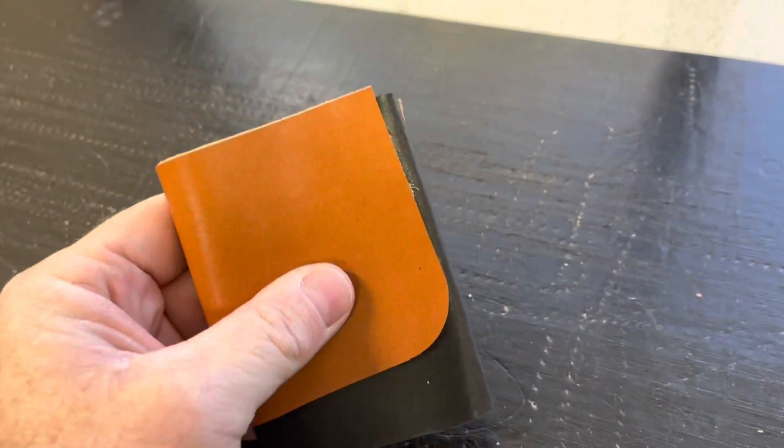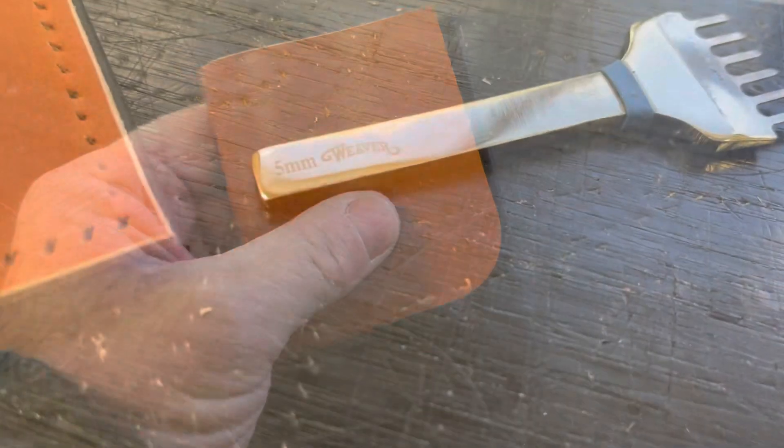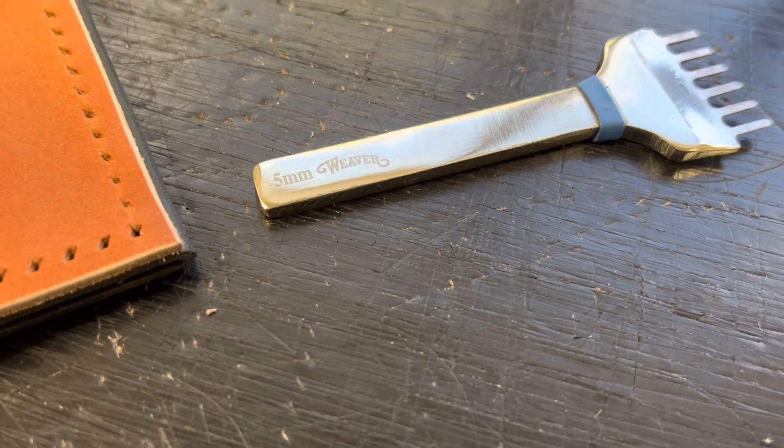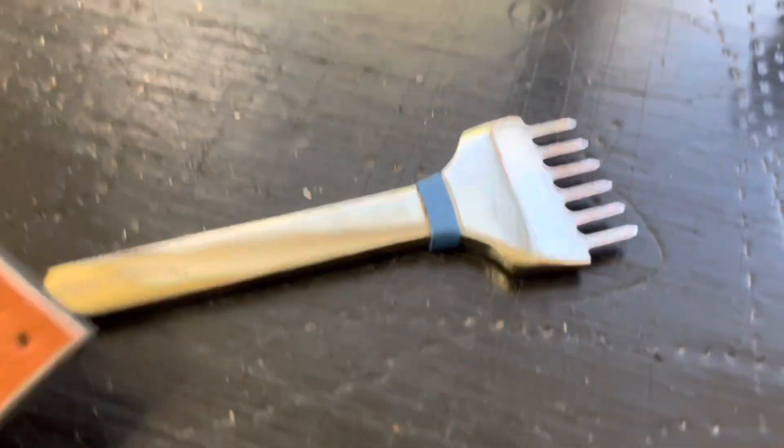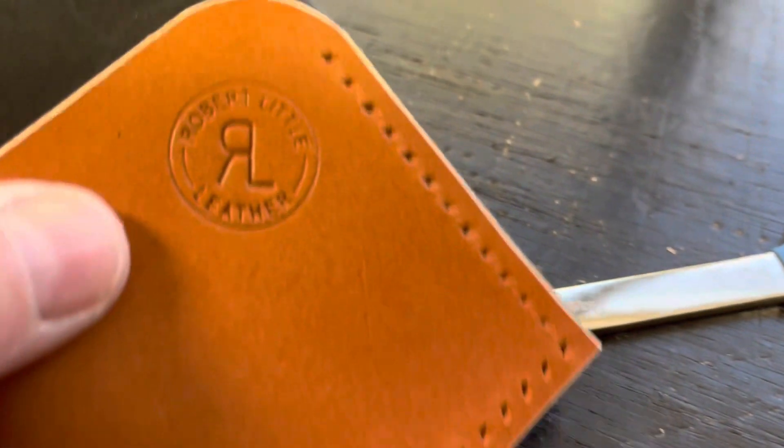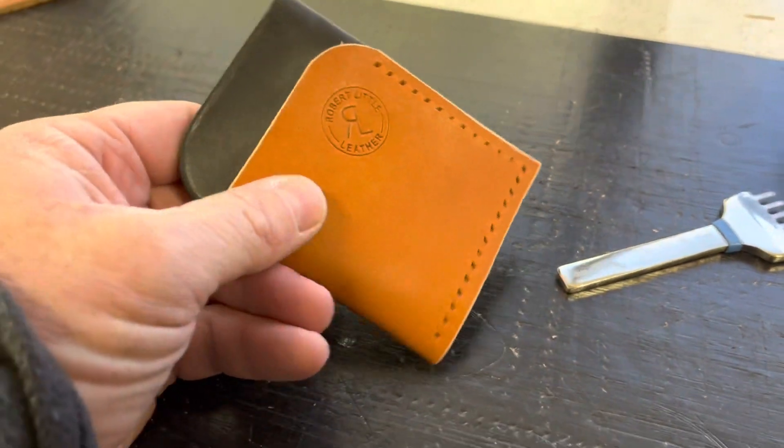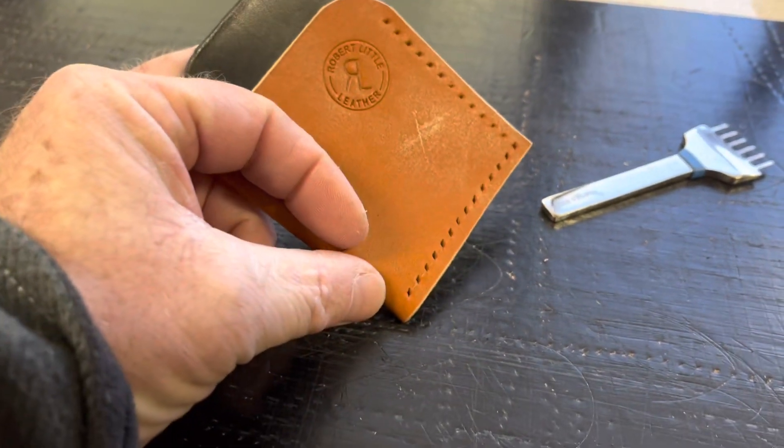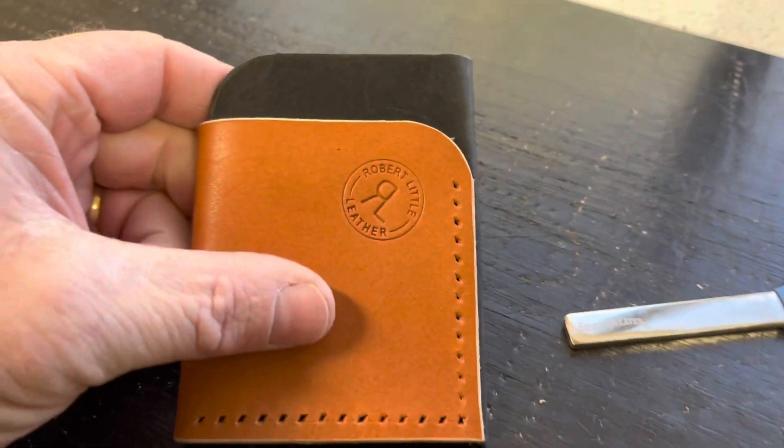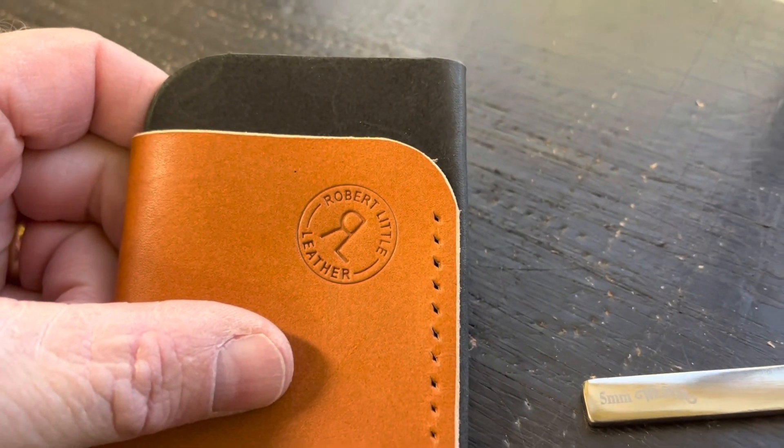Using this five millimeter stitching chisel from Weaver Leather, I created the holes here along the edge. I stayed back from this lower corner a little bit because I will round that slightly, and stopped up here at the top about the time it reaches where the radius starts.